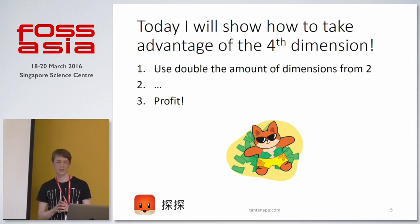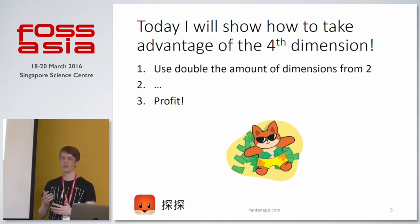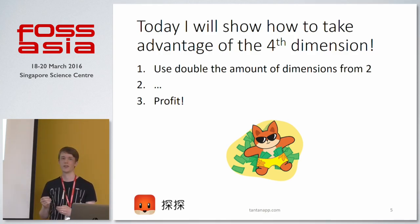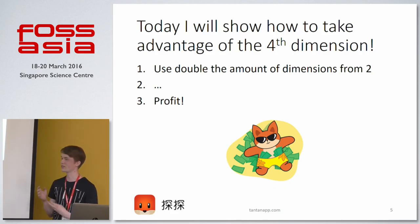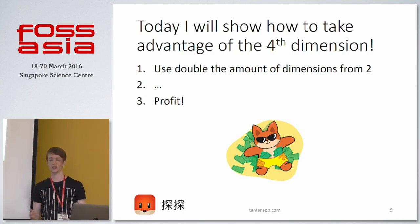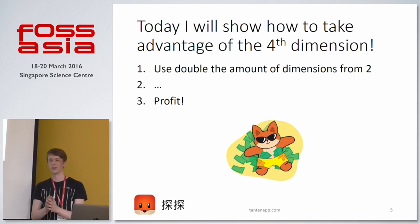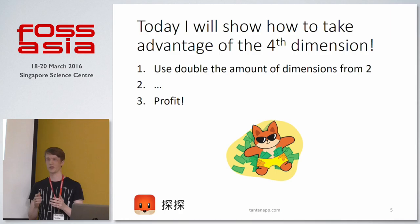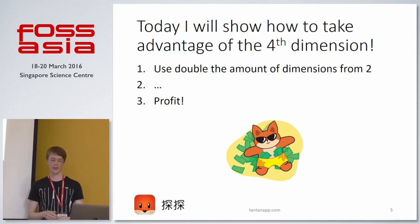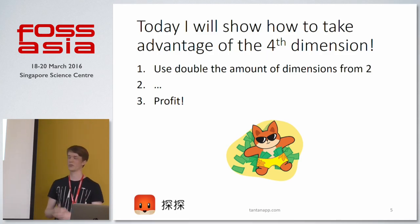My plan today is to show how this can be done, using Tantan to illustrate the use case. But this is not restricted to our use case — it can be used in many other applications. For example, if you want to find the 100 closest cars to you that are of a certain age, maybe between 10 and 15 years old, this could potentially also be useful.